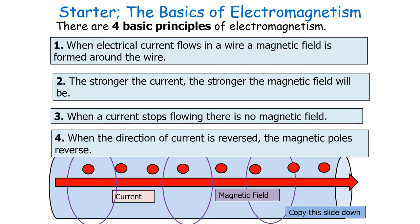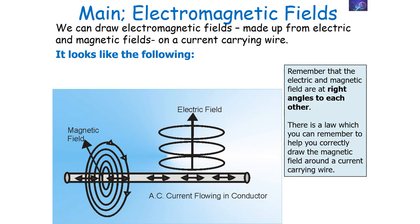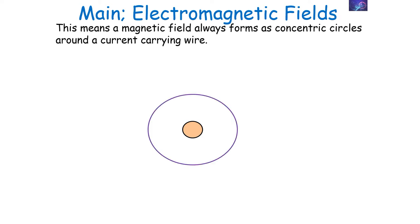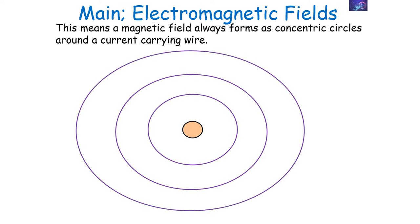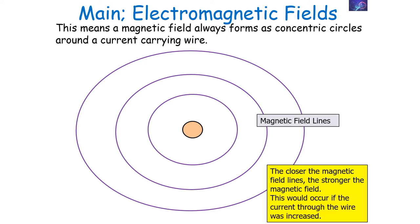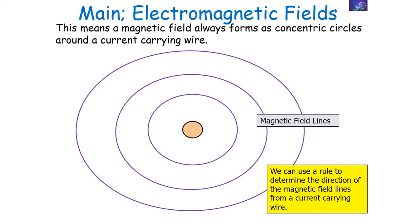These four basic principles allow us to explain any idea linked to electromagnetism. We can draw the electromagnetic field — both the electrical and magnetic fields — on a current-carrying wire, where they are at right angles to each other. This means the magnetic field around a current-carrying wire is found in concentric circles. Imagine the current-carrying wire coming out of the board; you get magnetic field lines forming as circles around that wire. The closer the magnetic field lines are to each other, the stronger the magnetic field, which occurs when the current is increased.